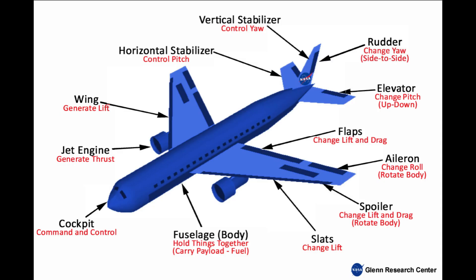Engines — power plant: these provide thrust to move the airplane forward. Some planes use jet engines; others use propellers.